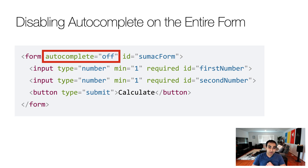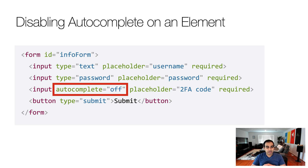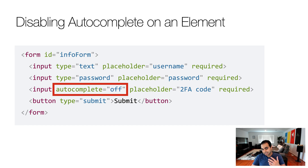There may be times where you don't want to disable autocomplete for the entire form — you may only want to disable it on a particular element. Here you can see an example where the input element for two-factor authentication has autocomplete turned off. The other inputs have autocomplete not even set, which means the default value of on is respected and that information will be stored and presented to the user in a convenient way.